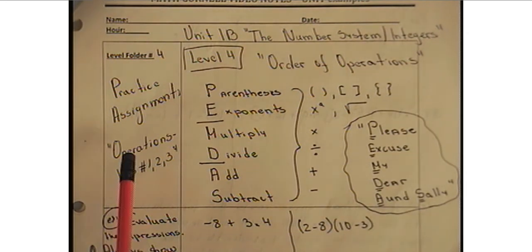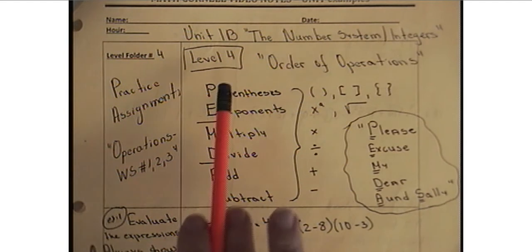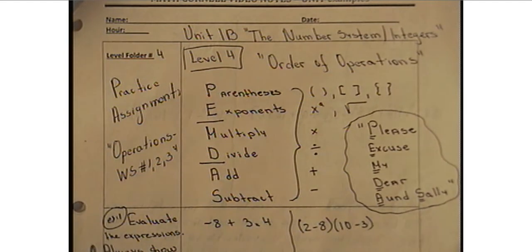On the left side your practice assignment will be operations worksheet 1, 2 and 3. This is a whole packet. It's going to be under level 4 folder in the green basket. Once you're done with your notes and video then you can begin with the practice assignment.